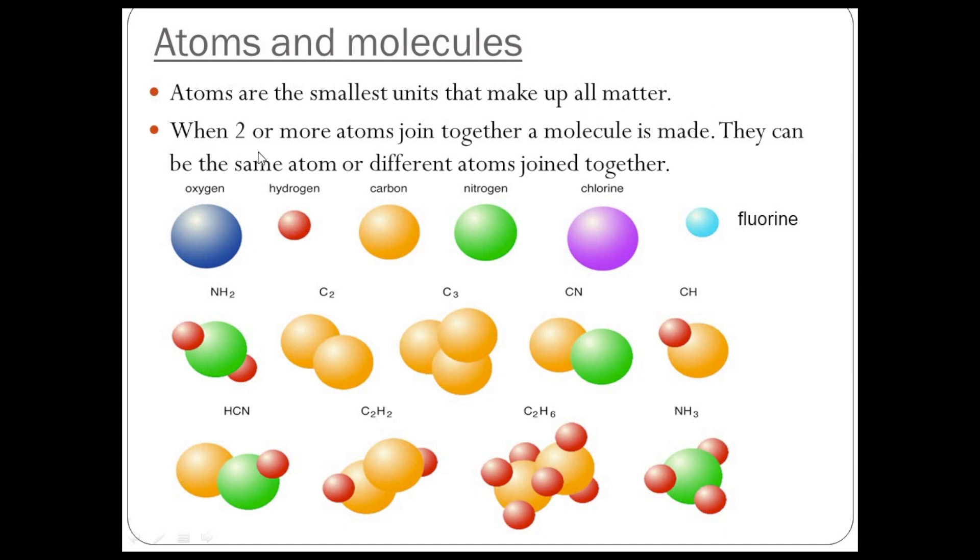When two or more atoms join together, a molecule is made. So you've got molecules here on the second row and the third row. Now the atoms can be the same or they can be different—it's still a molecule.